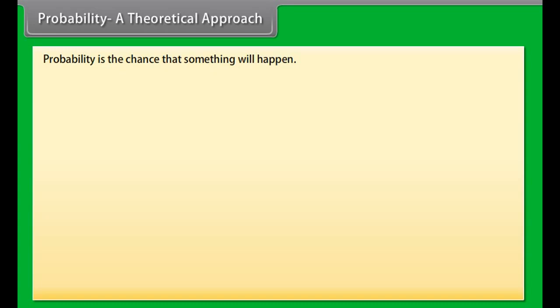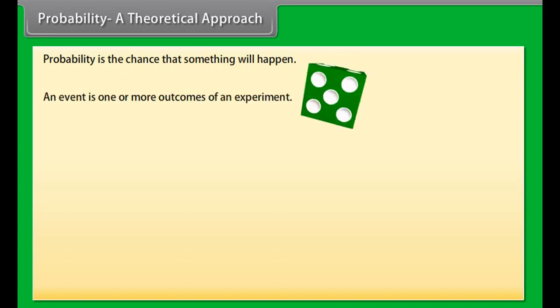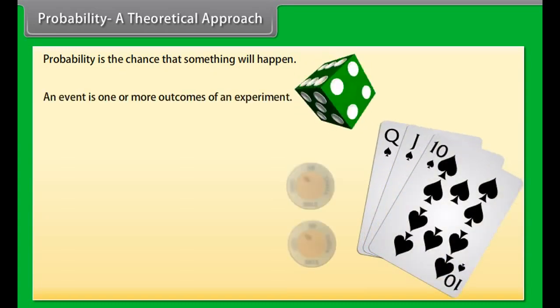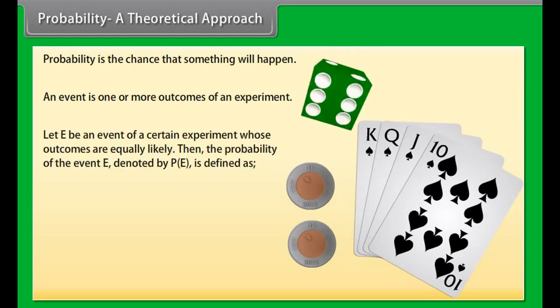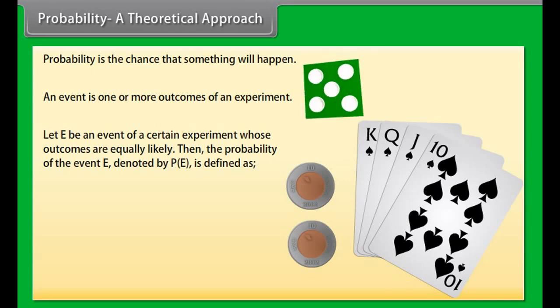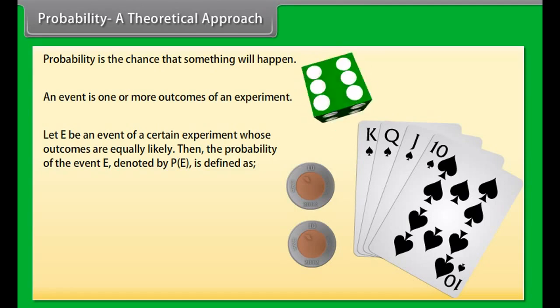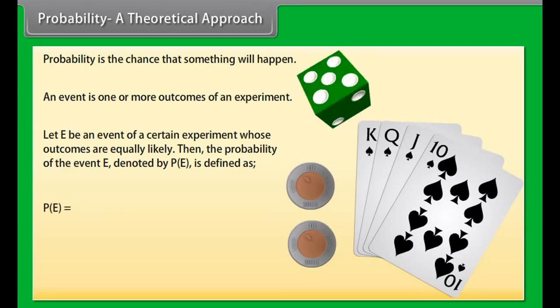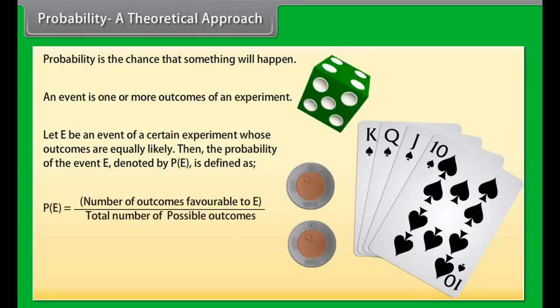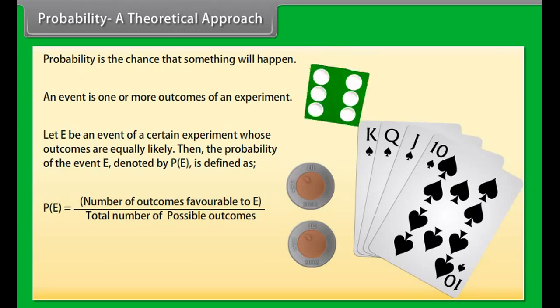Probability: a theoretical approach. Probability is the chance that something will happen. An event is one or more outcomes of an experiment. Let E be an event of a certain experiment whose outcomes are equally likely. Then the probability of event E, denoted by P(E), is defined as: P(E) equals number of outcomes favorable to E, divided by the total number of possible outcomes.